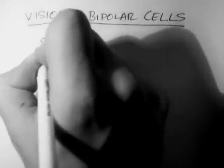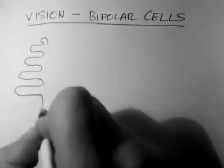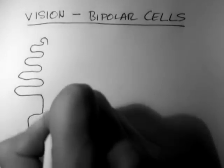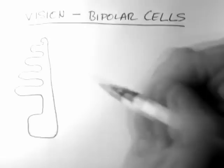So I'll start off by drawing out our photoreceptor. This one's a cone. And we're going to see what happens to a cone when it's in the dark.